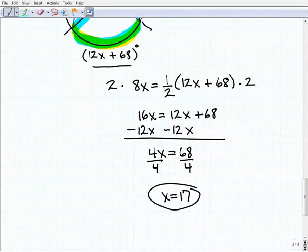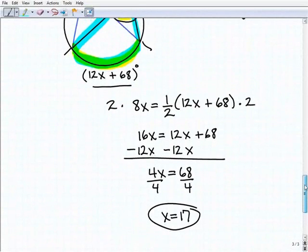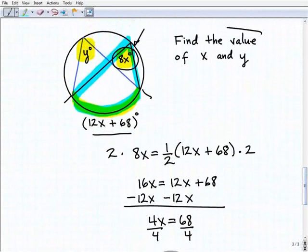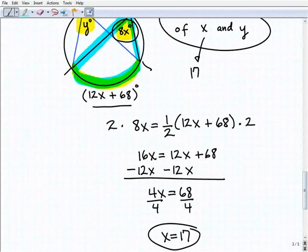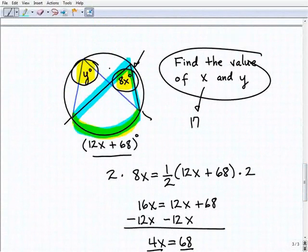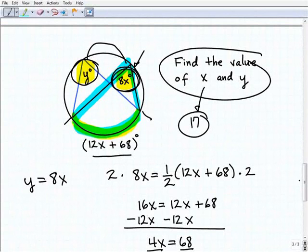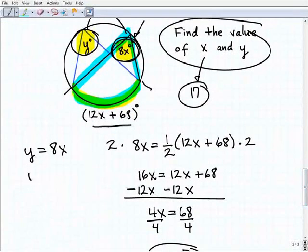But am I done yet? You say, okay, great, we solved the equation. No, no, no, let's go back and answer the question. It says find the value of x and y. So x equals 17. But y now, y is going to be the same as this measure of this entire angle, which is 8x. So y is going to equal 8x. Why? Because these represent two inscribed angles that intercept the same arc. Now, I know that x equals 17. So if x equals 17, y is going to equal 8 times 17, or y is going to equal 136.